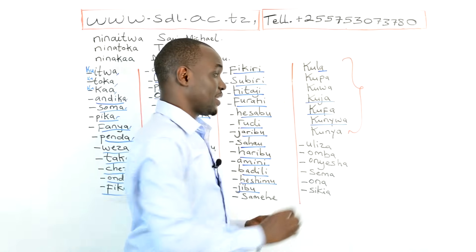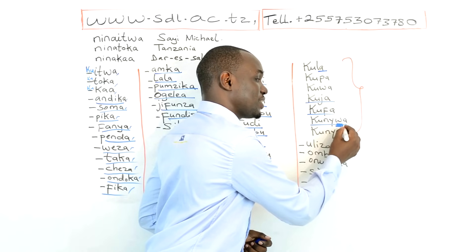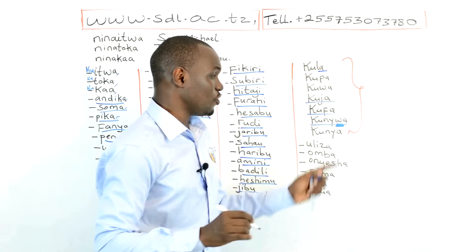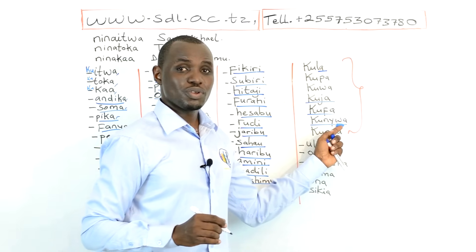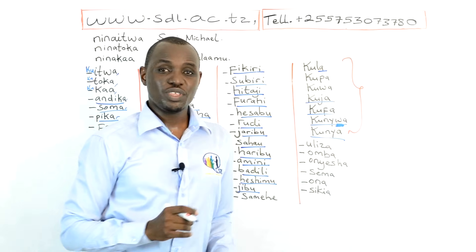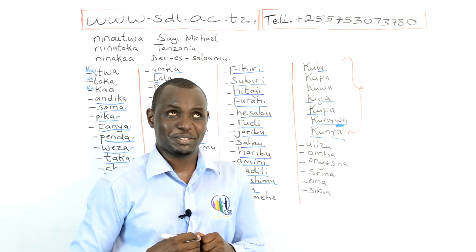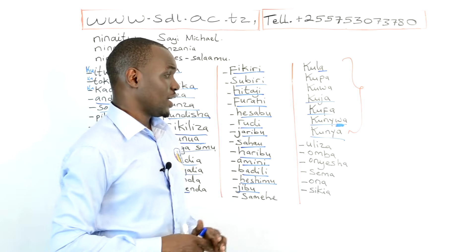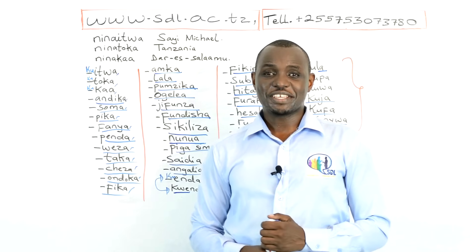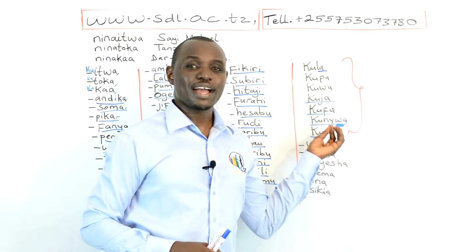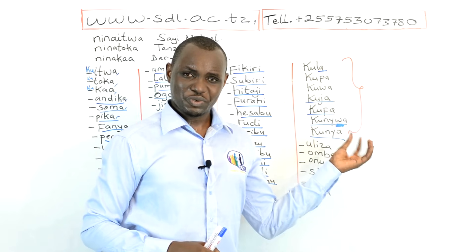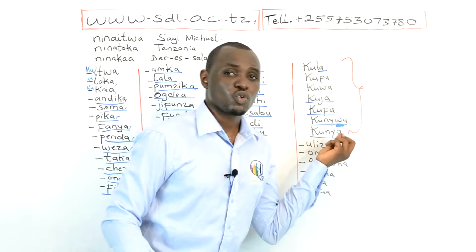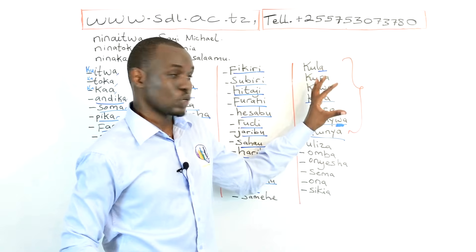It is very, very important to pronounce the W in Ku Nyuwa. The W is very important. Say Ku Nyuwa — don't say Ku Nya. If you don't pronounce the W, you will say Ku Nya, and Ku Nya means to poop. So when you say 'I drink soda,' you say Nina Ku Nyuwa soda — but if you don't pronounce it properly, you will say Nina Ku Nya soda. Practice it: Ku Nyuwa, Ku Nyuwa, not Ku Nya.